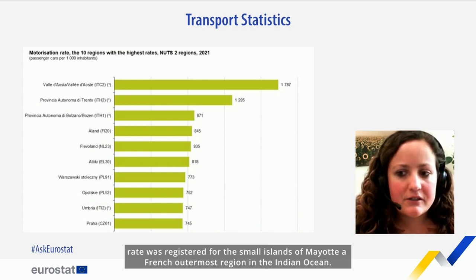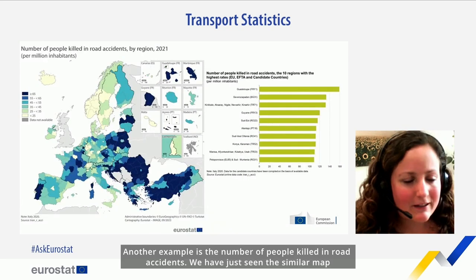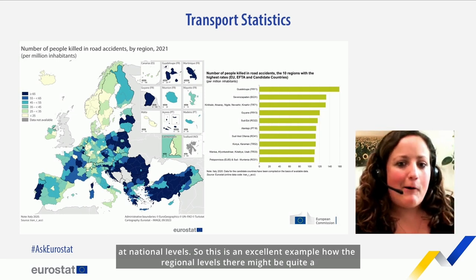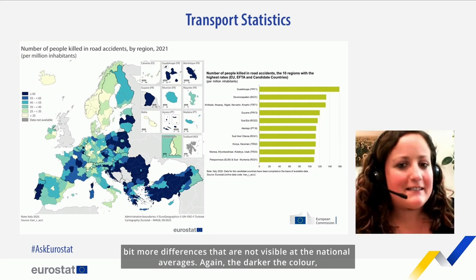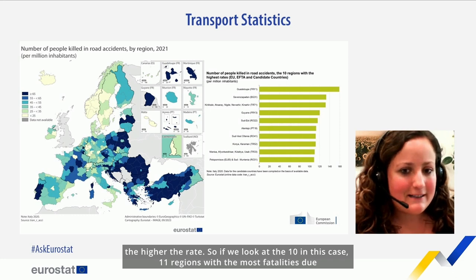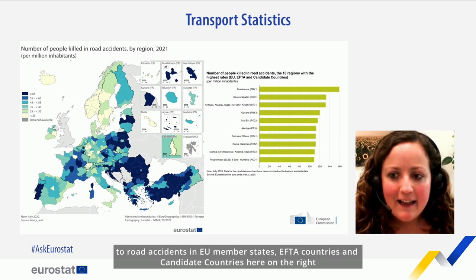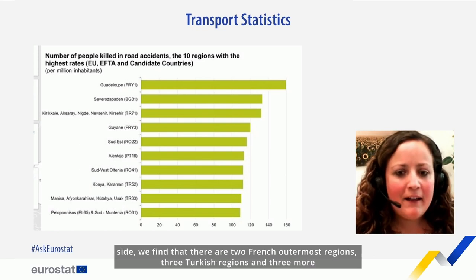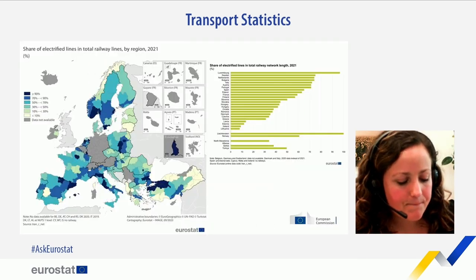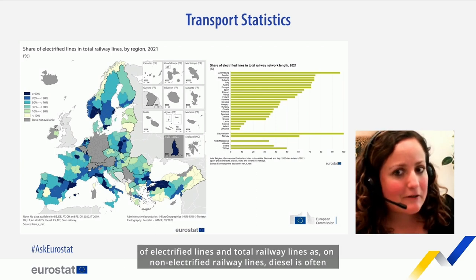Another example is the number of people killed in road accidents. This is an excellent example of how at the regional level there might be quite a bit more differences not visible at national averages. Looking at the 11 regions with the most fatalities due to road accidents in EU member states, EFTA countries and candidate countries, we find two French outermost regions, three Turkish regions and three Romanian regions, among others. Another interesting example from the perspective of greening the transport sector is the share of electrified lines in total railway lines, as on non-electrified railway lines diesel is often used as fuel.